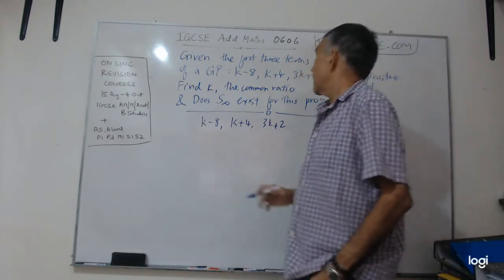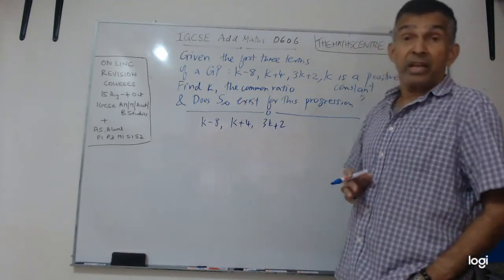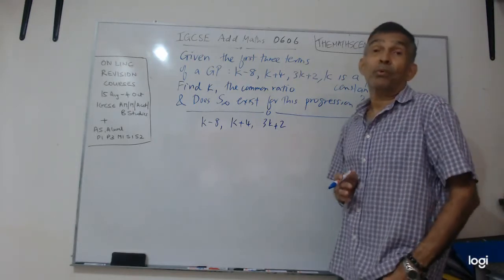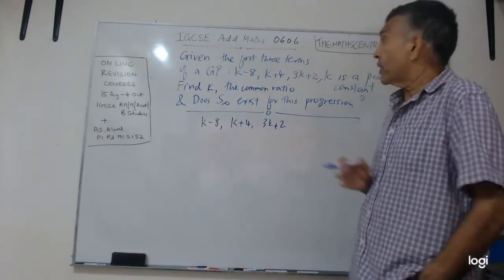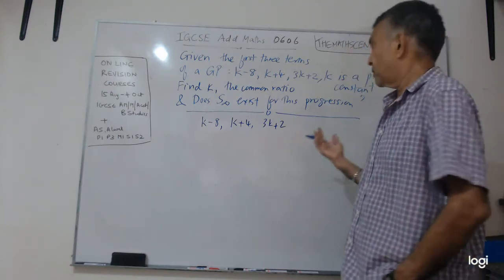You are asked to find K in this question, and then you're asked to find the common ratio, and then they ask you, does S infinity exist for this progression? They didn't ask you to work it, they just ask you whether it exists for this progression.